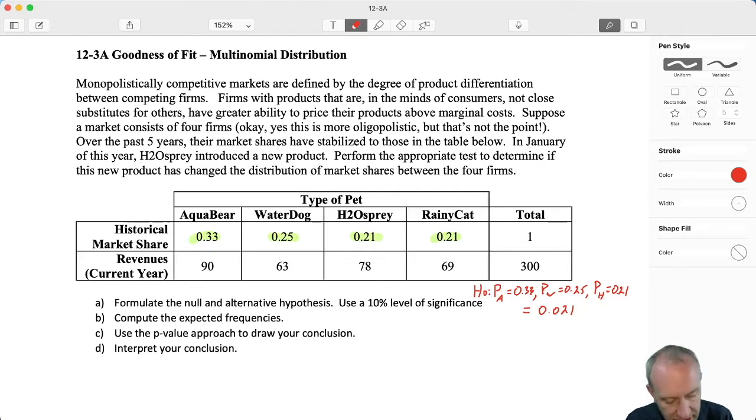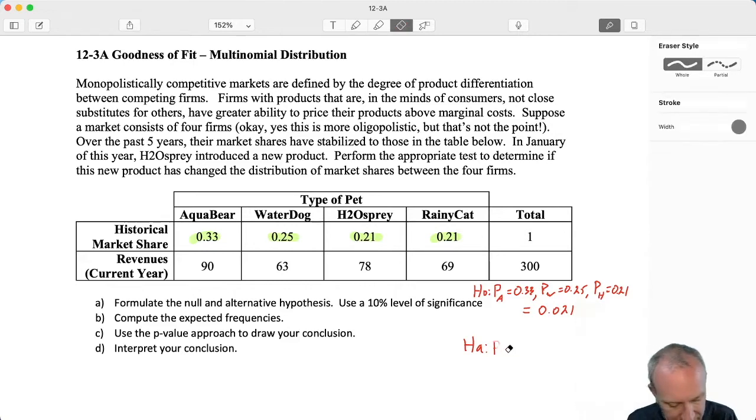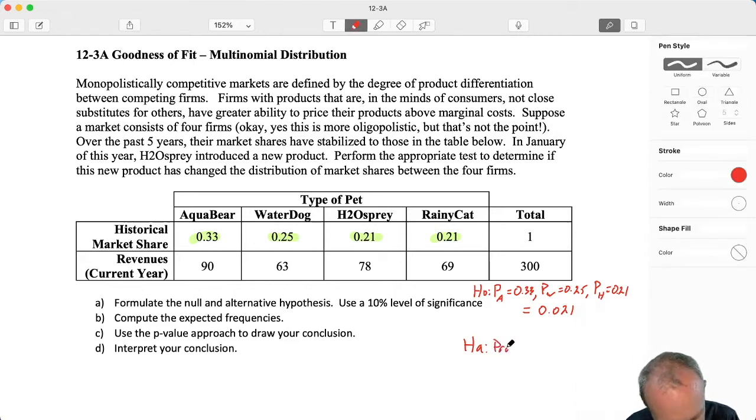Those market shares have not changed. The alternative is that yes, it no longer follows that same multinomial distribution. So here I will have the probabilities, I keep saying probabilities, my goodness, proportions are not, and I'm going to list them all off again: PA, PW, PH, and PR.